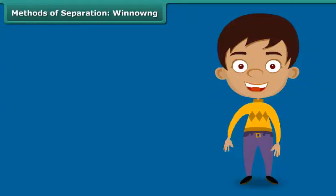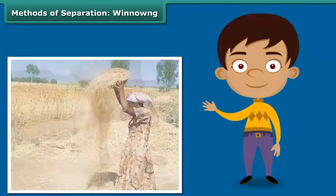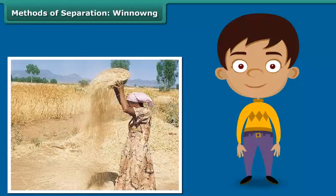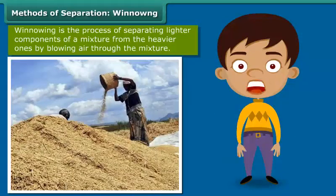During your numerous train trips down your countryside, you would have noticed women standing at a height, shaking a basket held over their heads continuously. They are separating the grain from the husk by simply allowing the wind to blow away the husk and other lighter impurities.